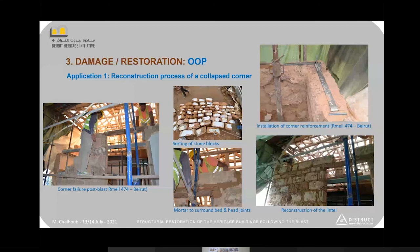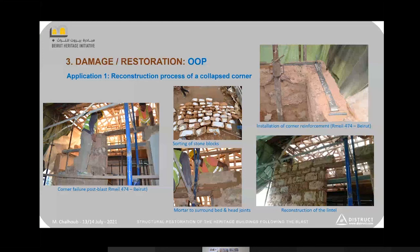I will present two applications recently done. The first concerns the reconstruction of a collapsed corner after the blast. The process starts by sorting the stone blocks — numbering them, cleaning them, labeling them in order to reuse them. The second photo shows how we fill the bed joints and head joints with lime mortar.